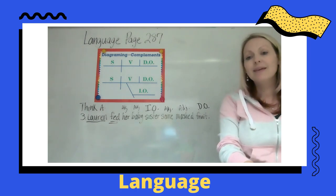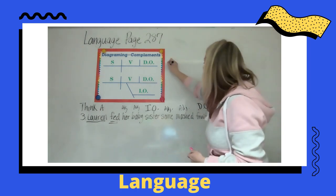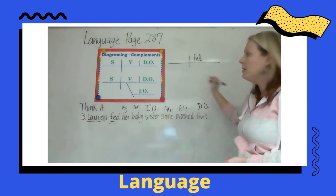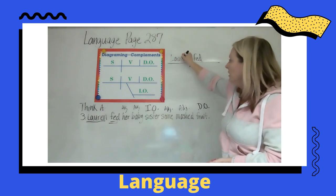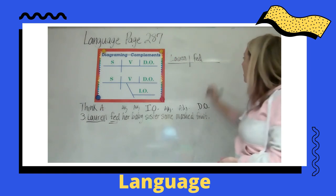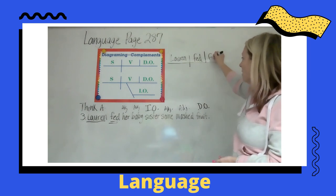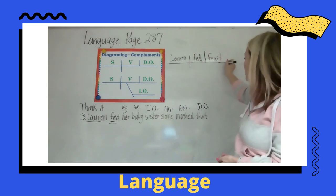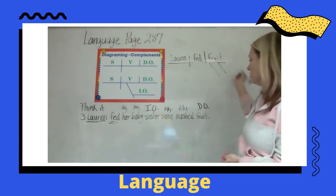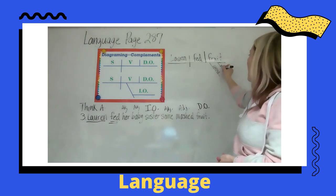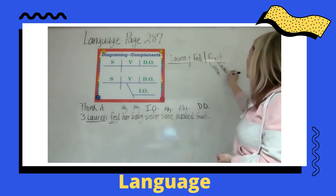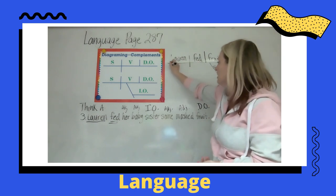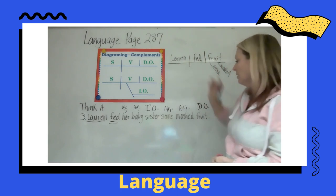Now diagramming — we have to make sure we get all of this on here. Fed is our verb and Lauren is our subject on the left. Then we have our line with our direct object fruit. Fruit has a couple of adjectives: some and mashed.